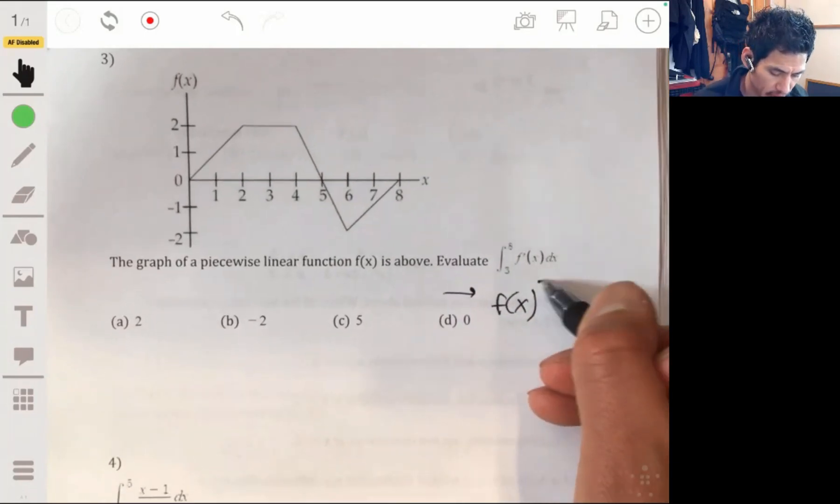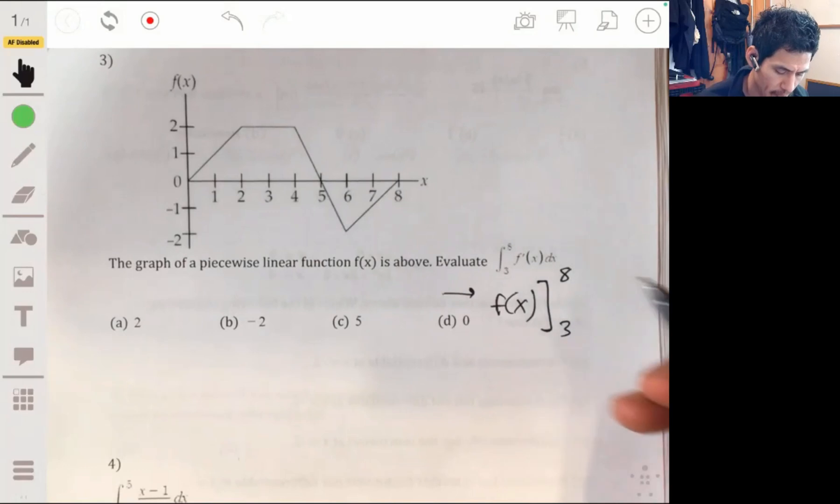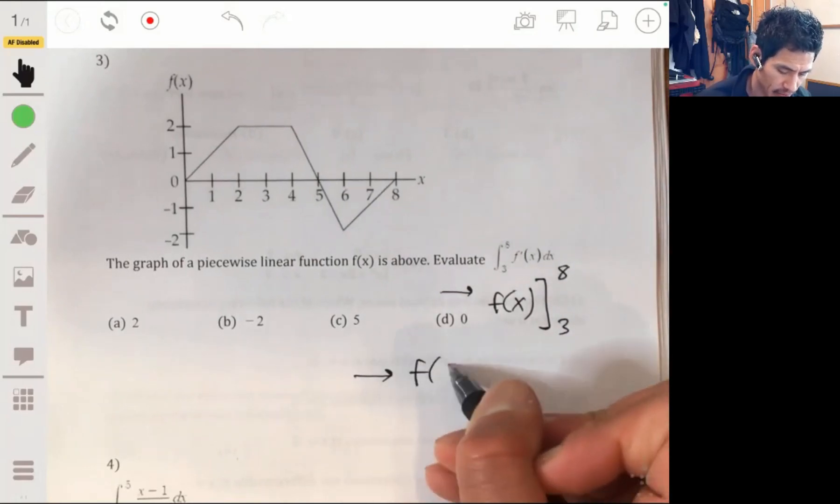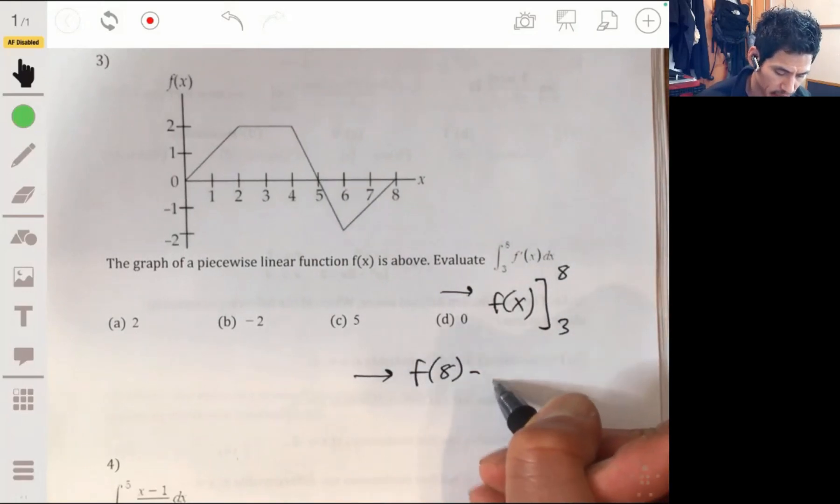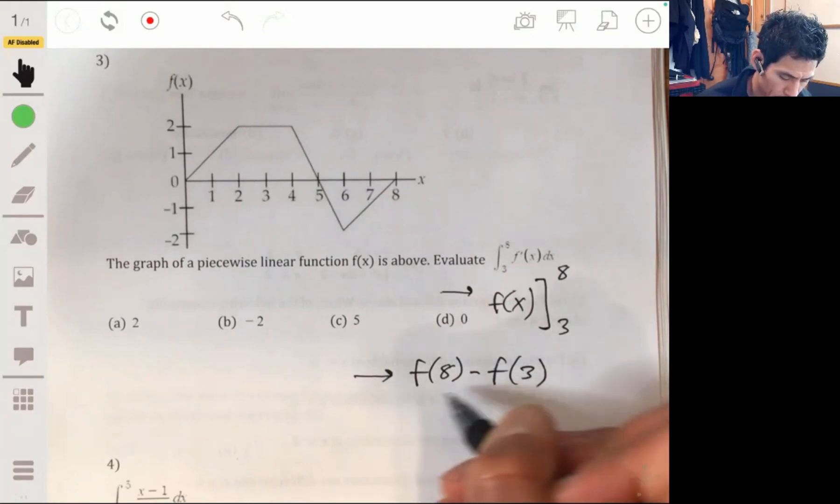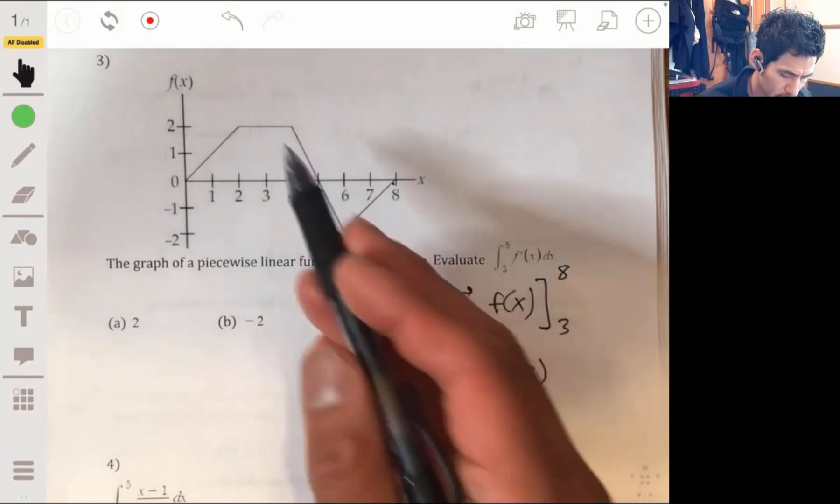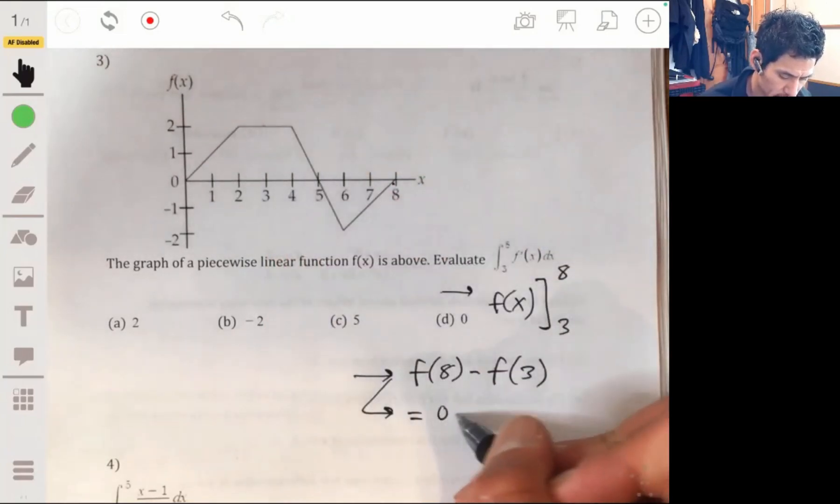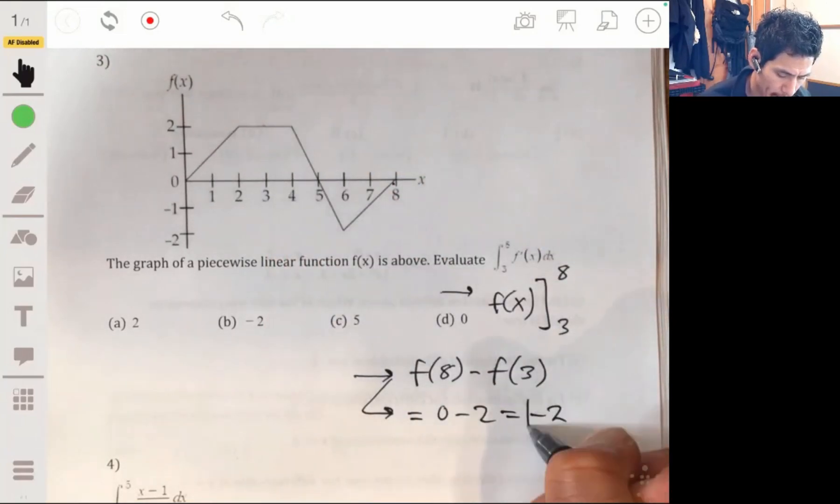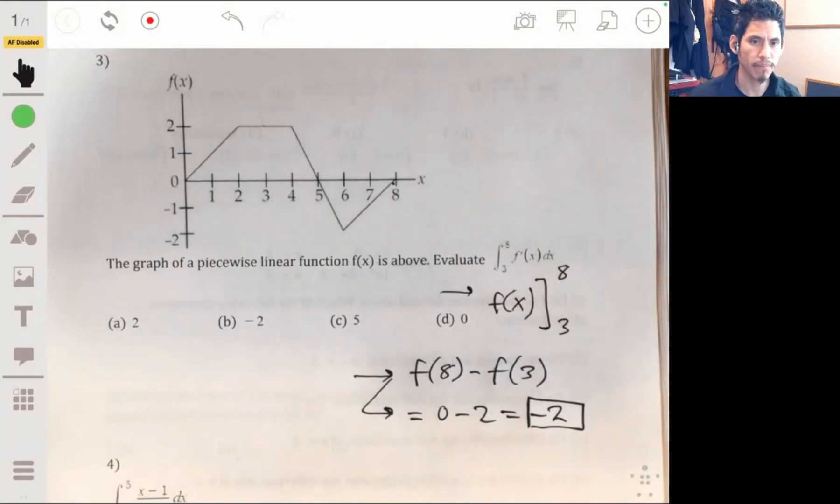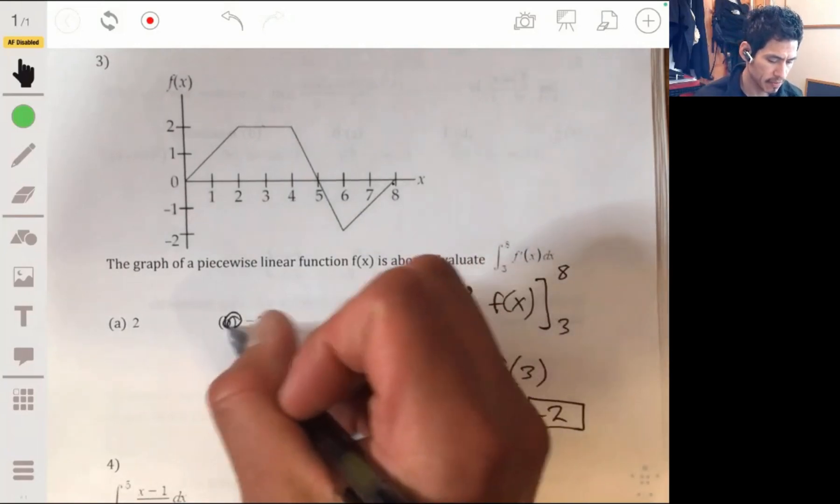So, this would just end up giving you f(x). And so, you're going to evaluate f(x) from 3 to 8. So, we essentially have f(8) minus f(3), which would be 0 minus 2, it looks like, or negative 2. And so, the answer is b.